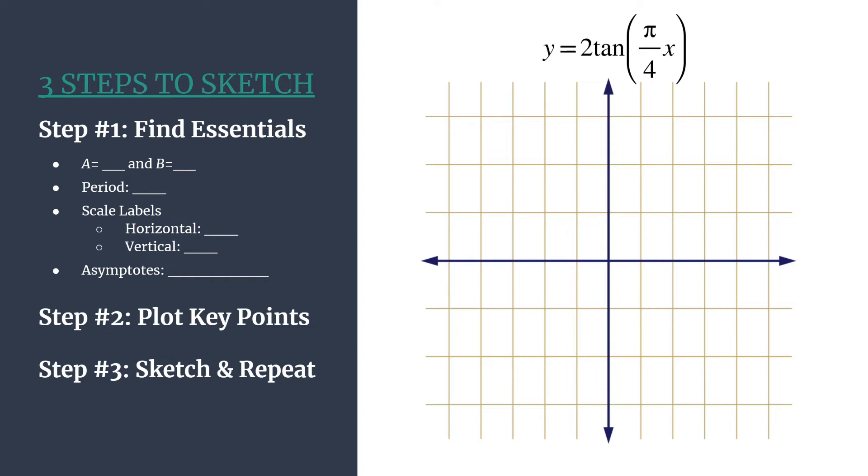Okay, so we have our steps to reference. Let's get started with step one, find the essentials. We can see that A, the coefficient in front of tangent is two, and B, the coefficient in front of x is pi over four.